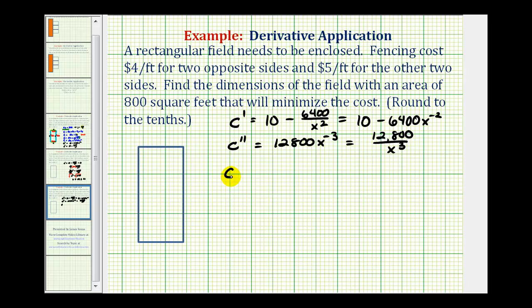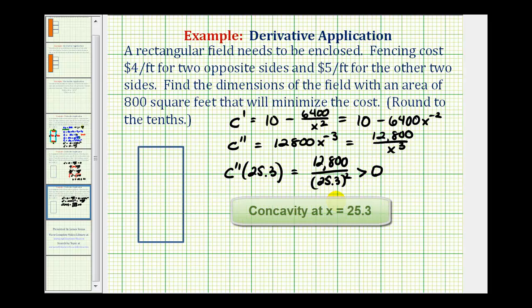Applying the power rule, we would multiply by negative two. It's going to be positive 12800x to the negative three, which we can now write as 12800 divided by x to the third. So at C double prime of approximately 25.3, we would have 12800 divided by 25.3 cubed. We only care about the sign here, so this is going to be positive or greater than zero. That tells us the concavity of the cost function. If the second derivative is positive, that means the function would be concave up, and therefore at the critical number 25.3, we would have a minimum function value.